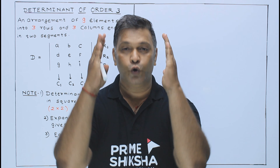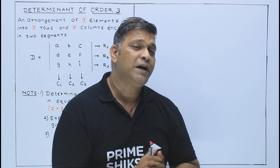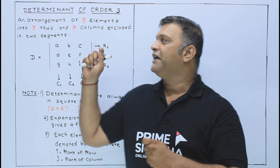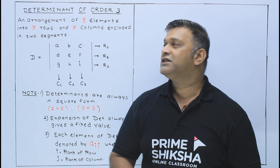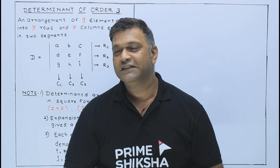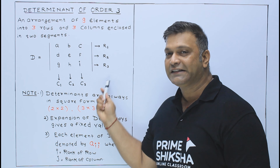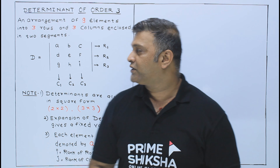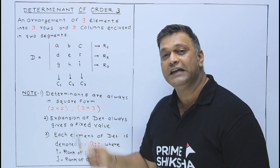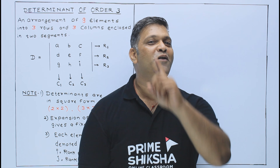And that becomes my Determinant of order 3. See the definition on the board: an arrangement of 9 elements into 3 rows — that is R1, R2, and R3 — and 3 columns — C1, C2, C3. This arrangement is the Determinant of order 3.